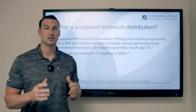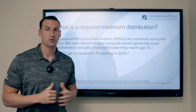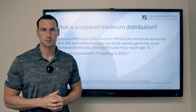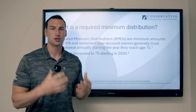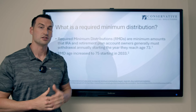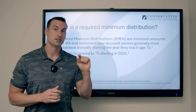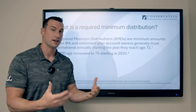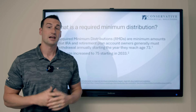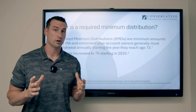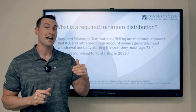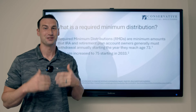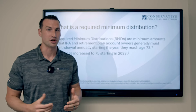If you've already started taking a required minimum distribution because you were age 72 before the law changed, you still have to take your RMD. You have until the end of the year to take it, otherwise you face a 25% penalty — and not only do you have that 25% penalty, but you still owe tax on the amount you didn't receive. So make sure you satisfy your required minimum distribution.